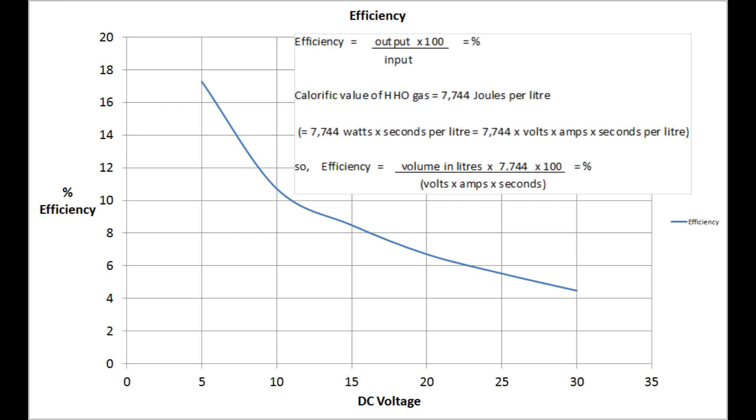As you can see the efficiency is pretty awful at 5 volts and it gets significantly worse as we get up to 30 volts. And this is simply another way of showing that the higher working voltage on the cell, although it produces more gas, it does so less efficiently.